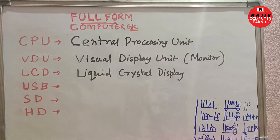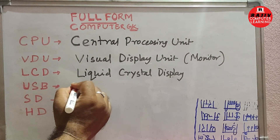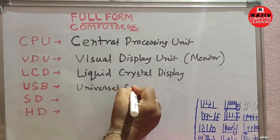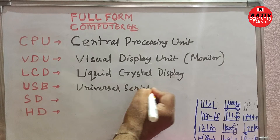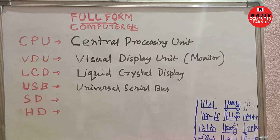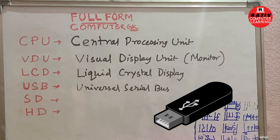Next is USB. The full form of USB is Universal Serial Bus. We use USB to connect computer peripherals or computer equipment with the computer using a USB port or USB cable. In Universal Serial Bus, we use USB pen drives, USB mouse, and USB keyboard.